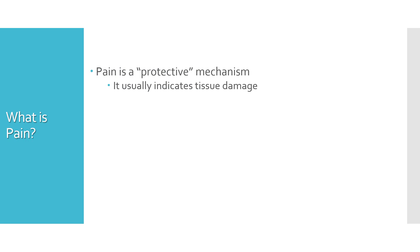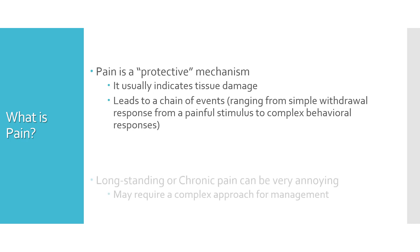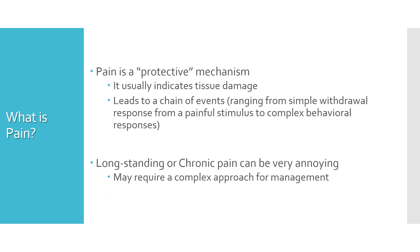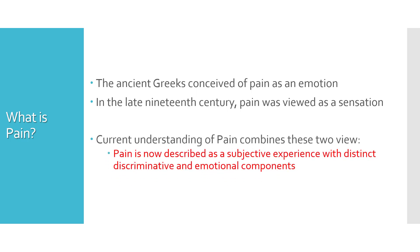Now what is pain? Pain is basically a protective mechanism. It usually indicates tissue damage and it leads to a chain of events which could range from a simple withdrawal from the painful stimulus to complex behavioral responses. Long-standing or chronic pain can be very annoying and it requires a complex approach for management. The ancient Greeks conceived of pain as an emotion. In the late 19th century pain was viewed purely as a sensation. The modern understanding of pain is a combination of two — pain is now described as a subjective experience with distinct discriminative and emotional components.